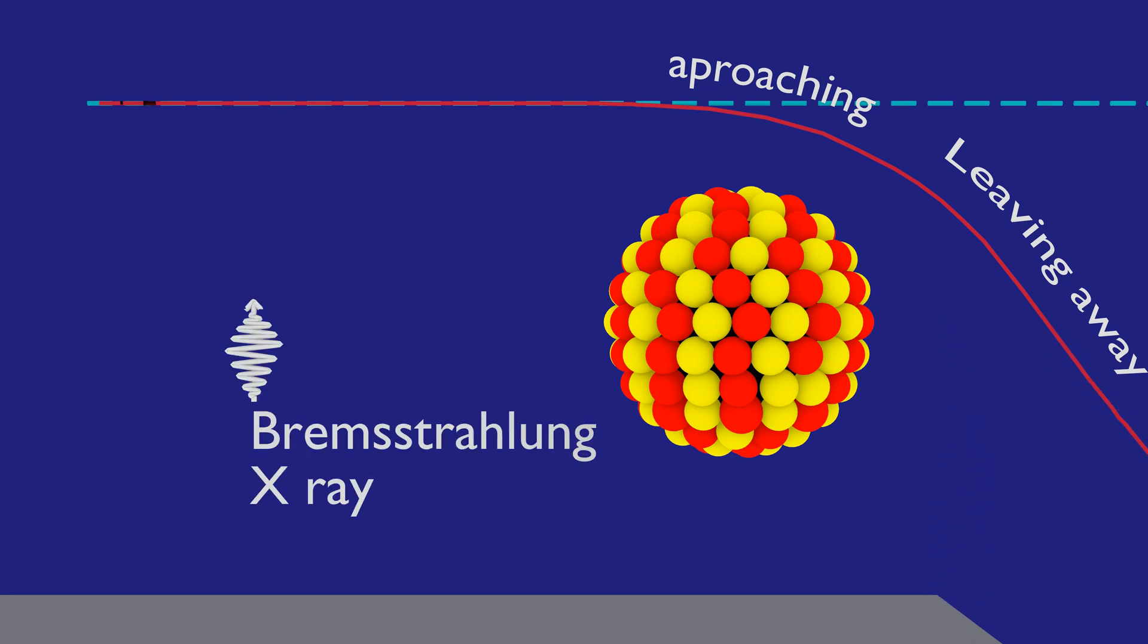Slowing down of electron means the electron is losing kinetic energy. This loss in kinetic energy appears as X-ray. X-ray thus produced is called Bremsstrahlung X-ray.